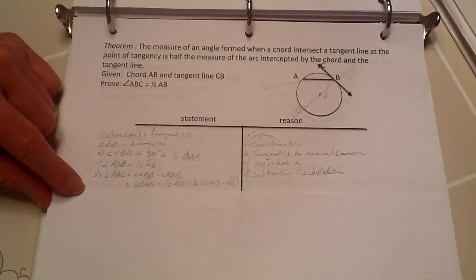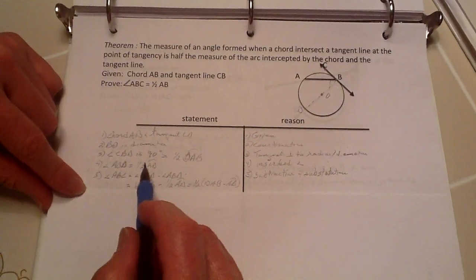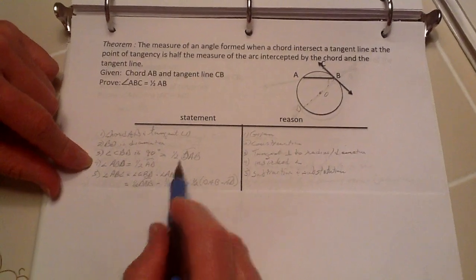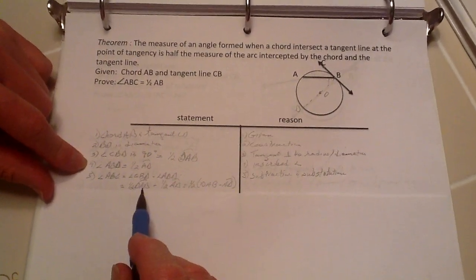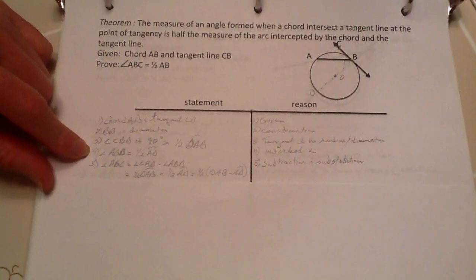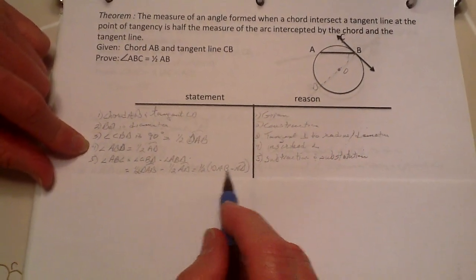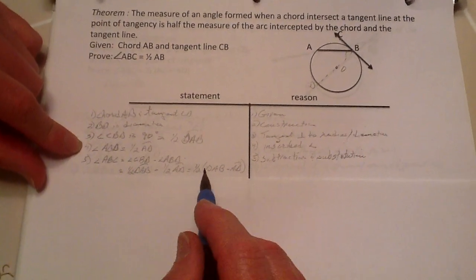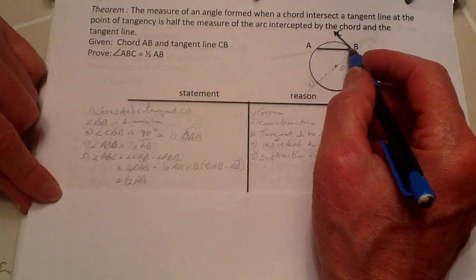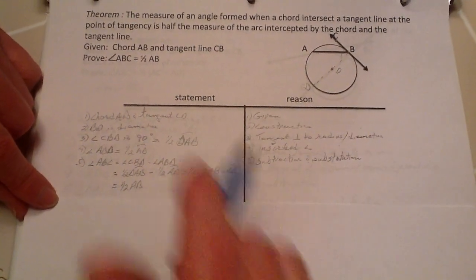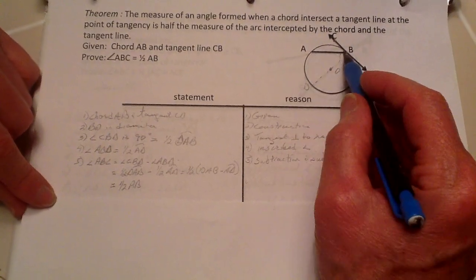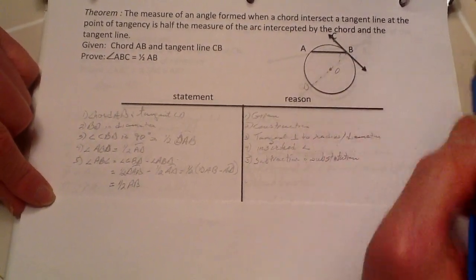if we substitute in these points here that we have now, one half this arc minus one half this arc is going to equal—we substitute this out—so therefore it's going to leave the arc of AB, and therefore we have proved that the angle ABC is going to equal one half of this arc.